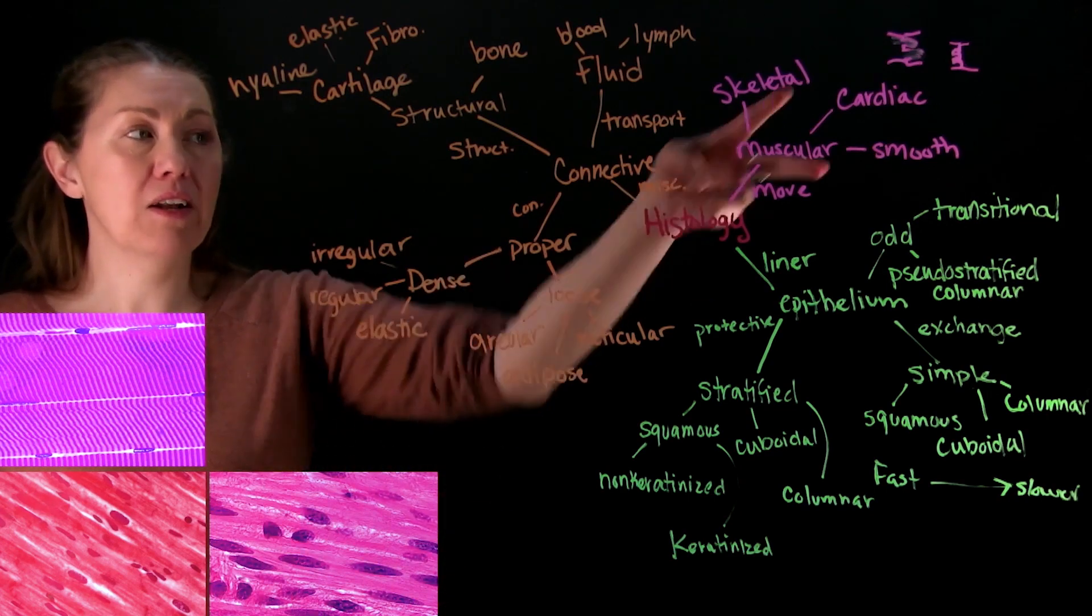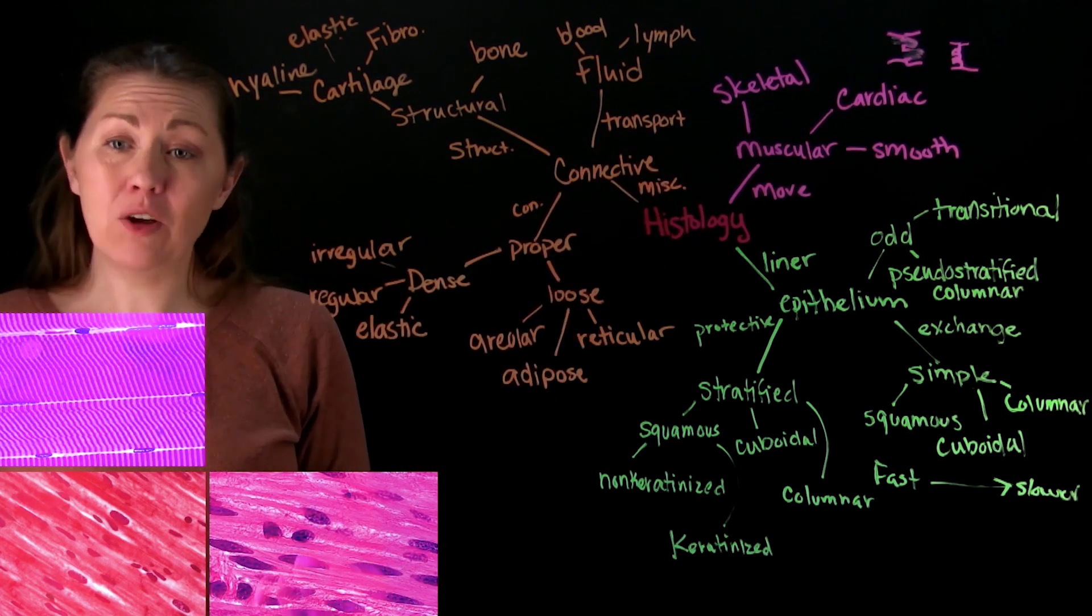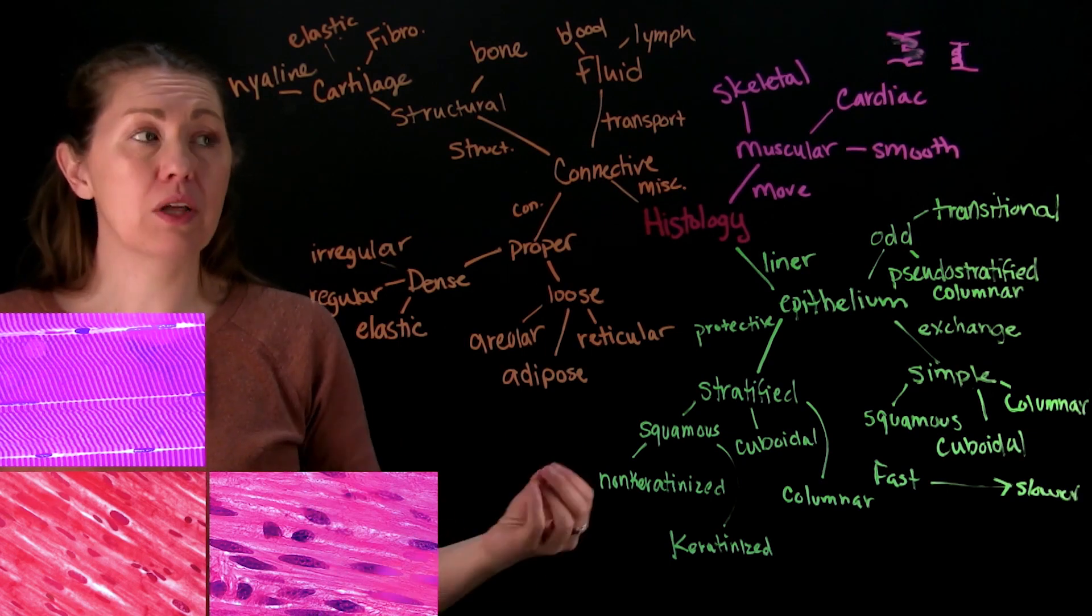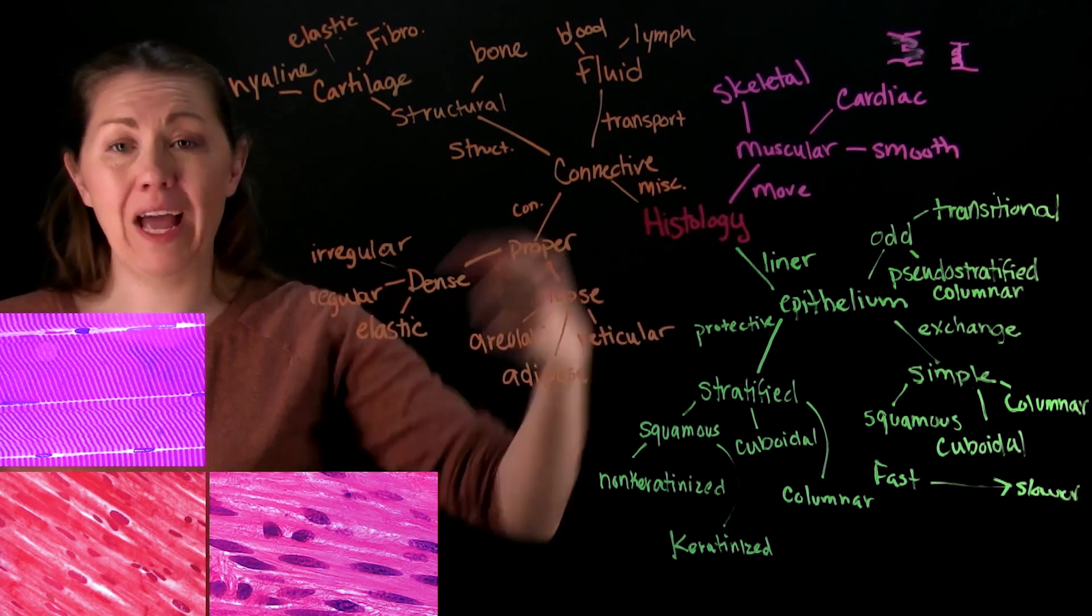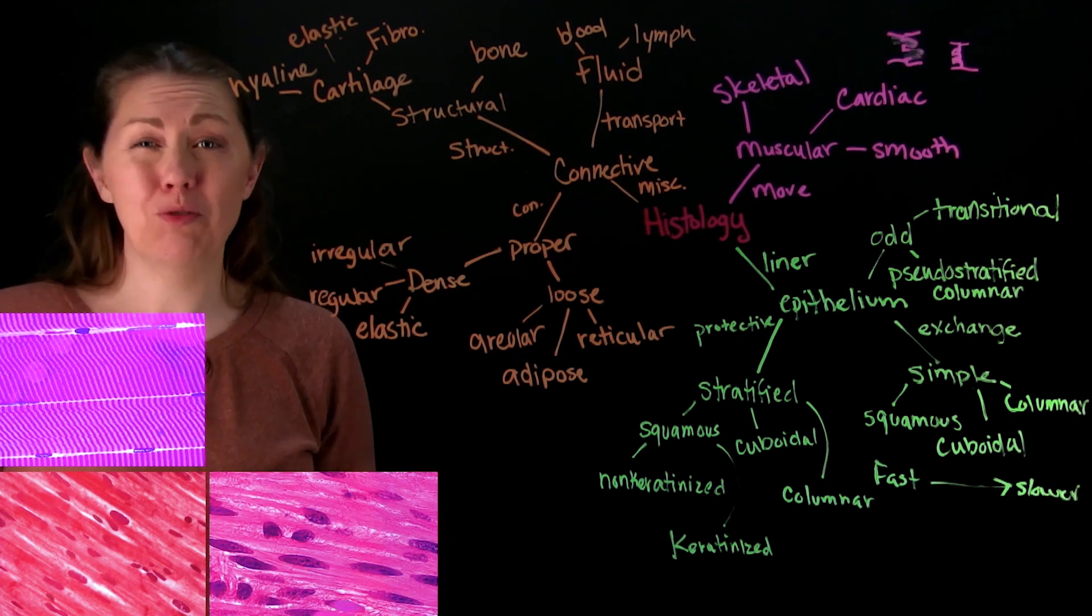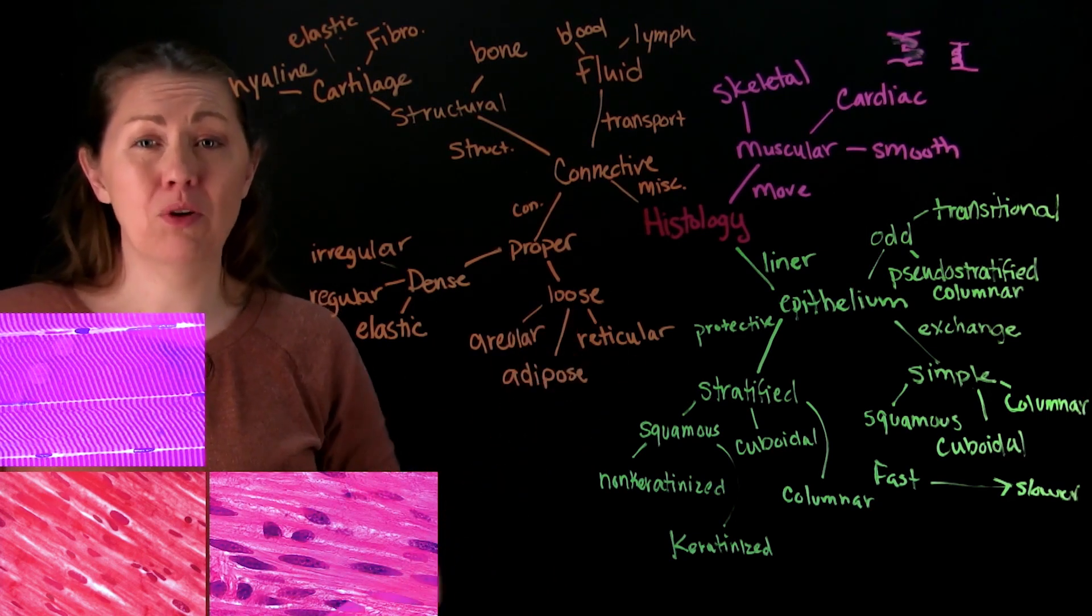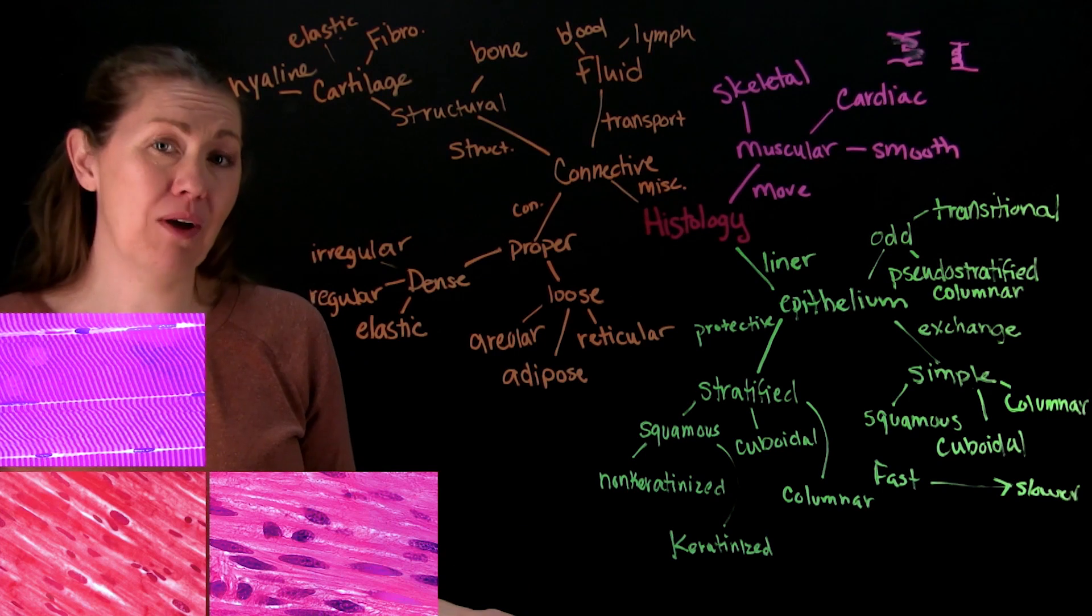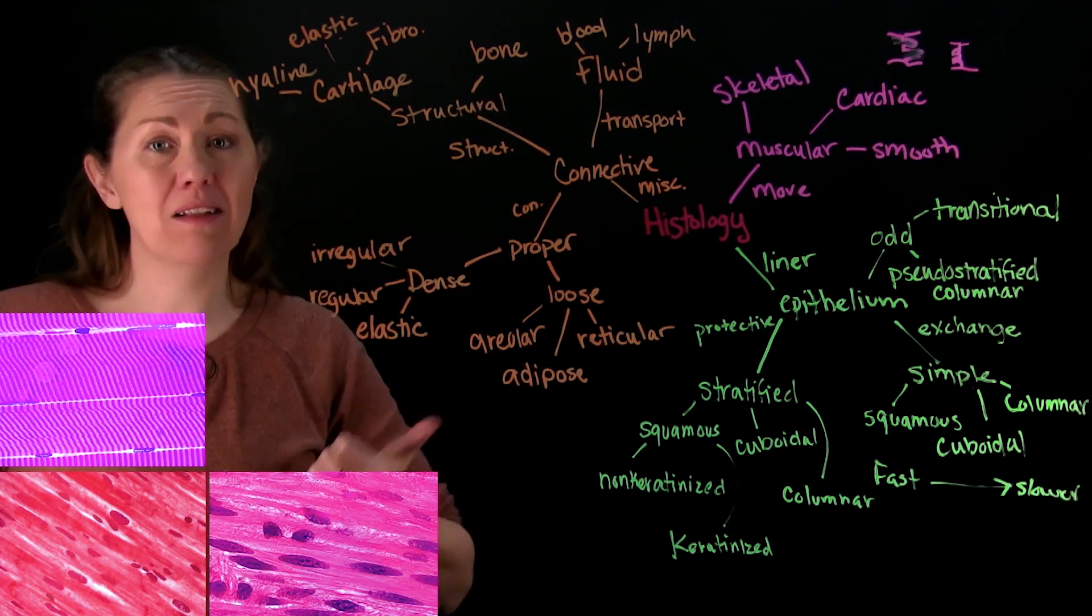Now if you don't have voluntary say then you're left with these two. So then the second question you have to ask yourself, are you the heart? If you are part of the heart then it's cardiac, if you're not then it's got to be smooth. So anywhere in your body that you're doing movement that you're not aware of, smooth muscle. So making the hair stand up like when you have goosebumps, you have no say over that, that's smooth muscle. Moving food along the digestive tract, smooth muscle.